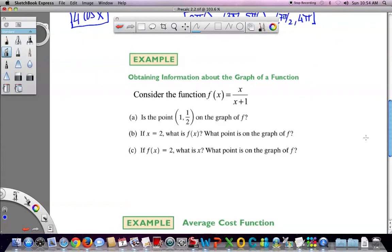We're looking at this. Is the point (1, 1/2) on the graph of f? Well, if you want to know that, just plug in one and see what happens. So one divided by one plus one is one over two. So yes. If x is two, what is f of x? Well, f of two would give you two divided by two plus one. That's 2/3. So what point is on the graph of f? That would be the point (2, 2/3). So here you don't really get a choice. You have to give me something in ordered pair notation.